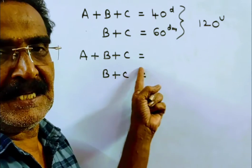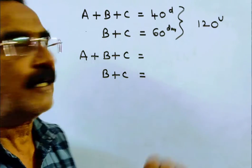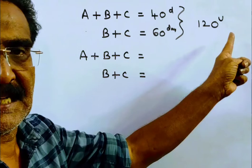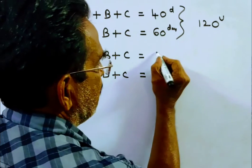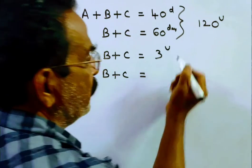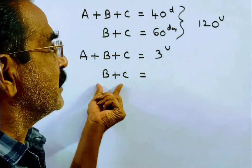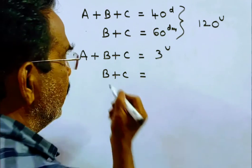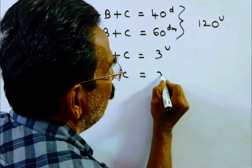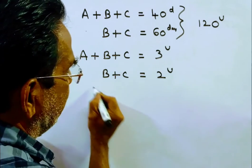Then A plus B plus C can do 3 units of work per day. 40 goes into 120 three times, so A plus B plus C can do 3 units of work per day, whereas B plus C, 60 goes into 120 twice, so B plus C can do only 2 units of work per day.